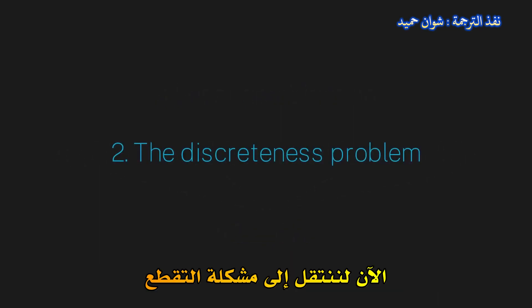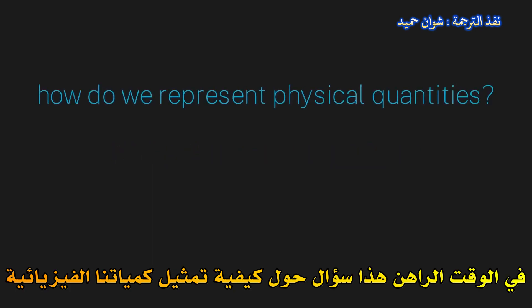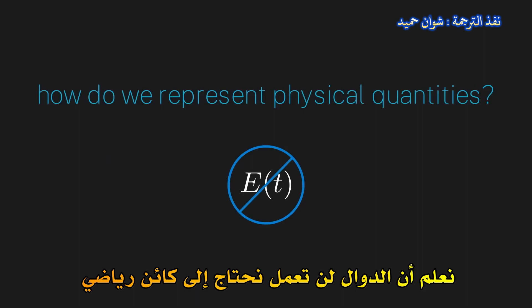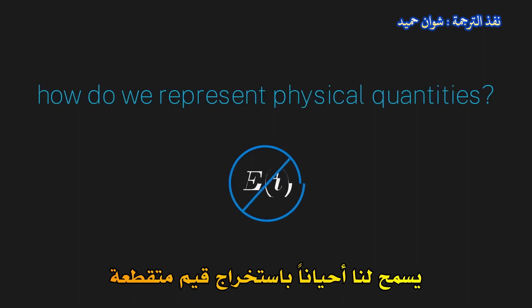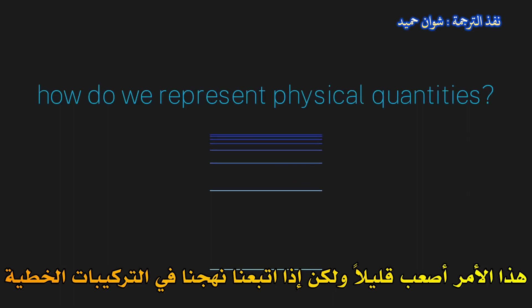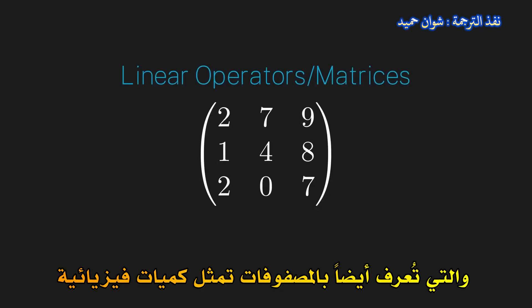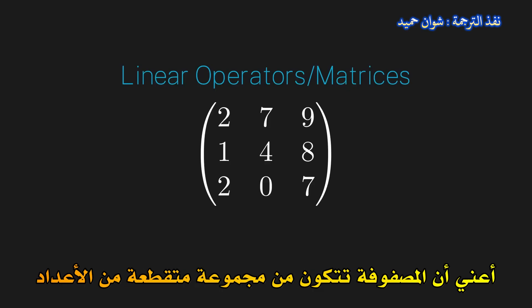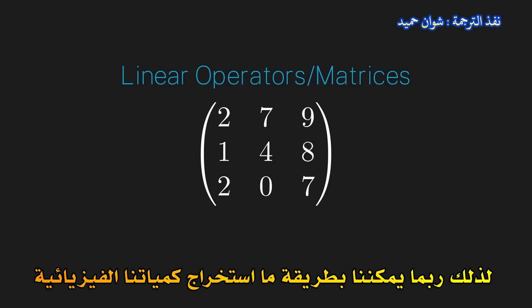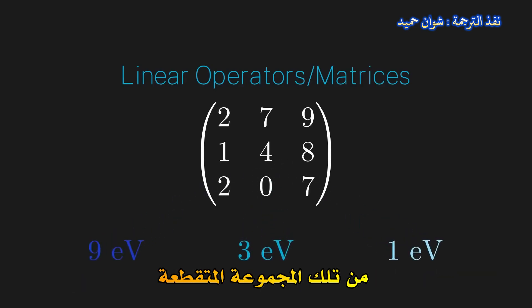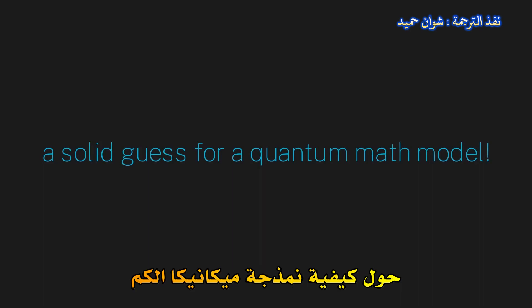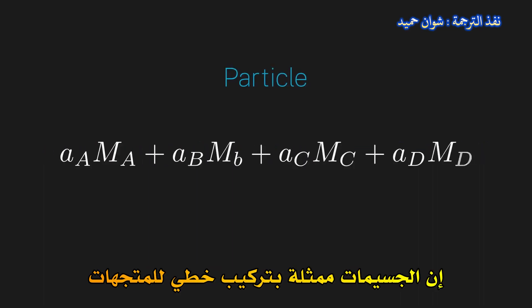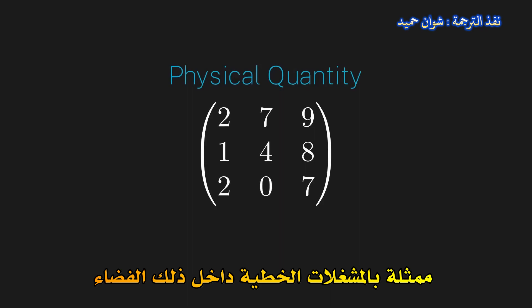Now let's move on to the discreteness problem. This is now a question about how we represent our physical quantities. We know that functions won't work — we need a mathematical object that allows us to sometimes extract discrete values. If we follow our lead on linear combinations, we may guess that maybe linear operators, also known as matrices, represent physical quantities. A matrix consists of a discrete set of numbers, so maybe we can somehow extract our physical quantities from that discrete set. So putting it all together, we now have a really solid guess into how we want to model quantum mechanics: particles are represented by a linear combination of vectors in some vector space, and physical quantities are represented by linear operators within that space.